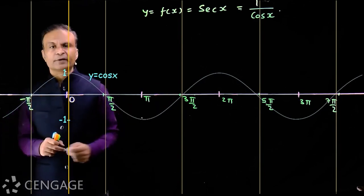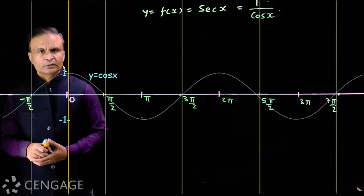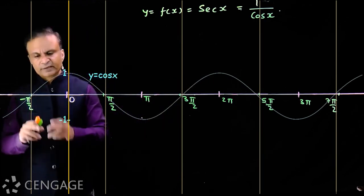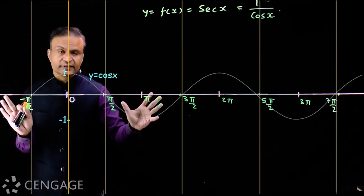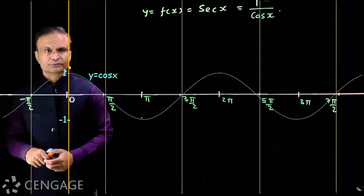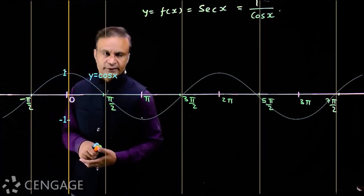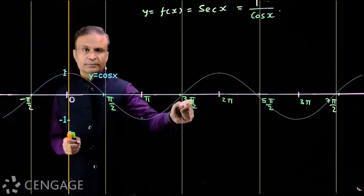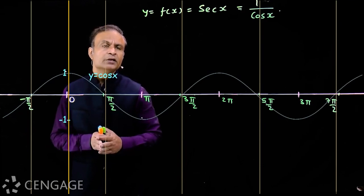We consider the interval from -π/2 to 3π/2, which is one complete cycle of cos(x). We could also consider 0 to 2π, but here we purposefully use -π/2 to 3π/2. The width of this interval is 2π, which is the fundamental period of cos(x). For x = -π/2, π/2, or 3π/2, cos(x) = 0, meaning sec(x) is not defined at these three values.